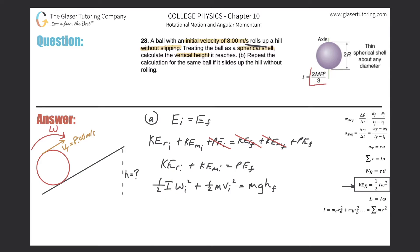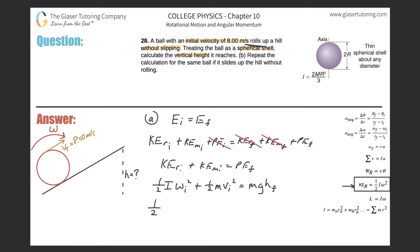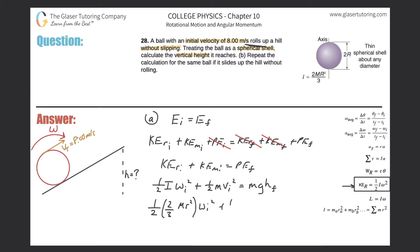Now substitute the moment of inertia formula for a thin spherical shell from the OpenStax textbook (page 359), which is two-thirds mr². So the first term becomes one-half times (two-thirds mr²) times ωi², plus one-half mvi², equals mghf. The mass of the rotating shell is the same as the mass of the whole ball.